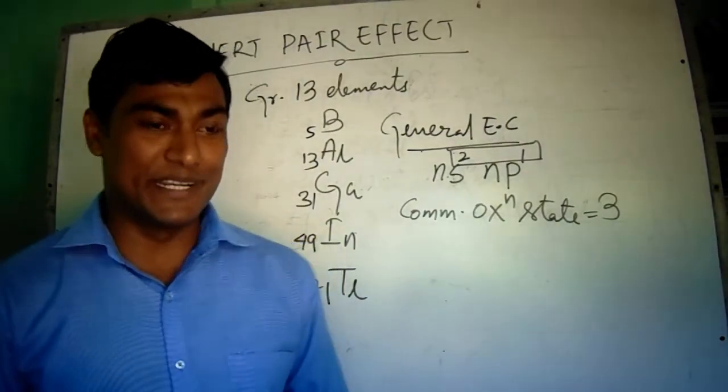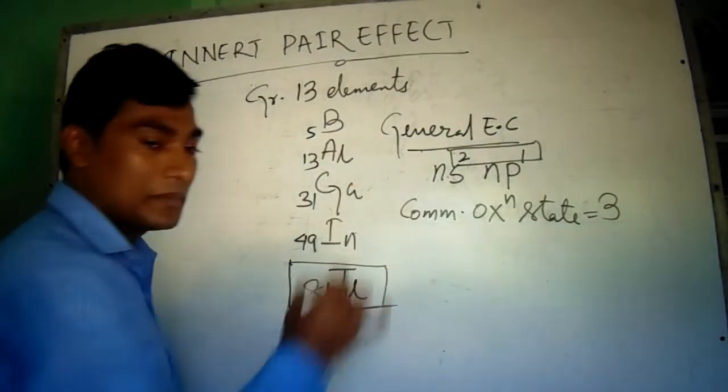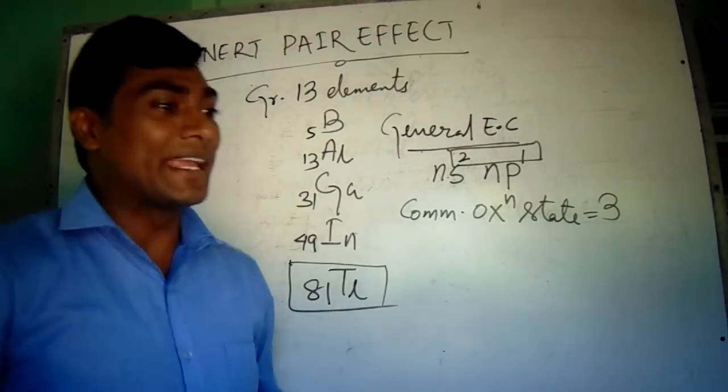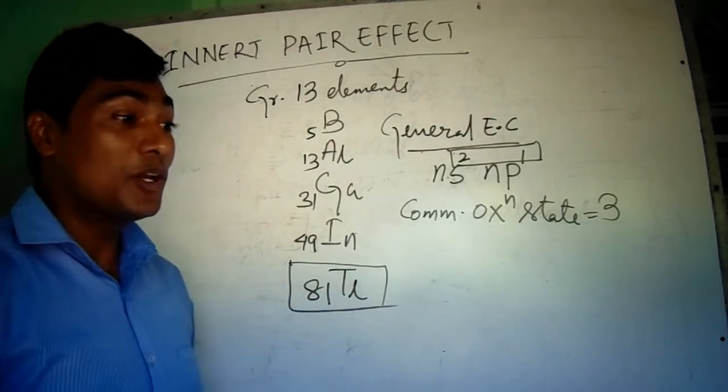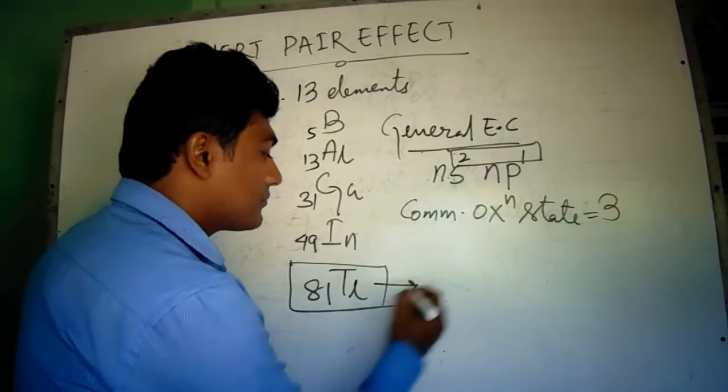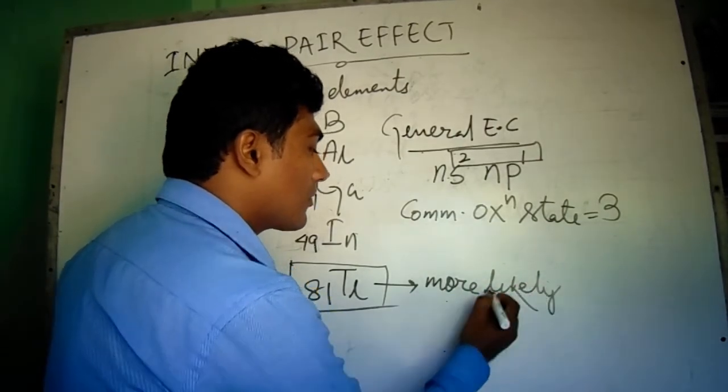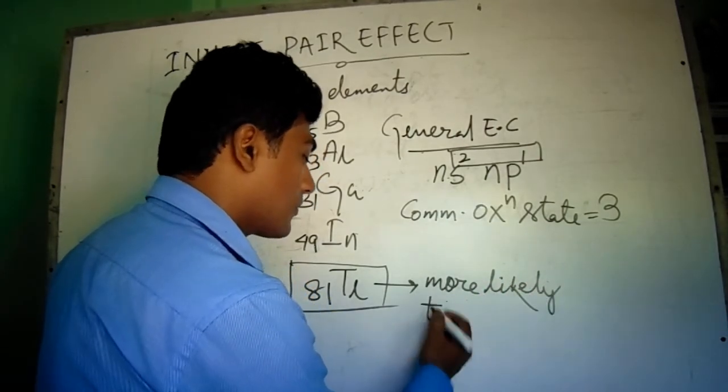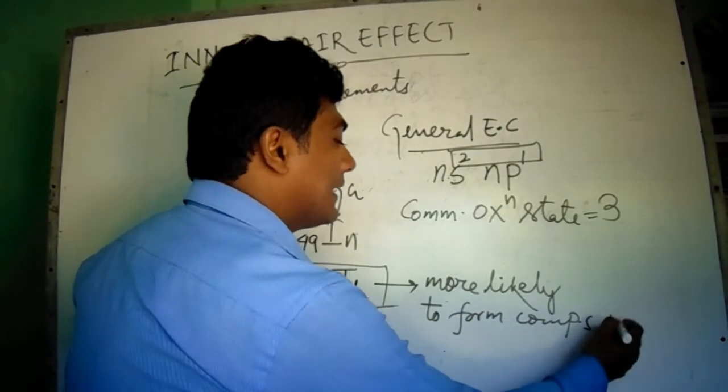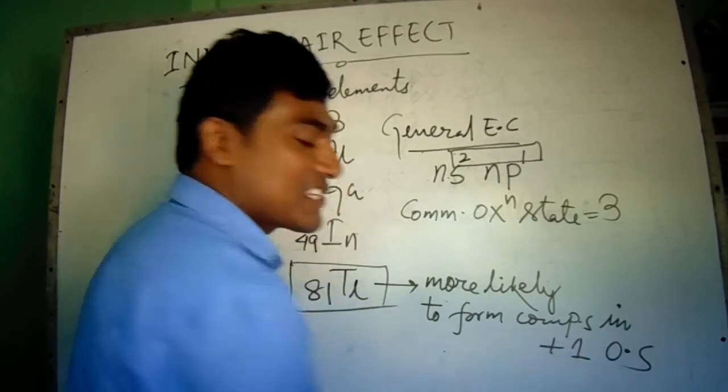But the heaviest element, thallium, is more likely to form compounds in +1 oxidation state.